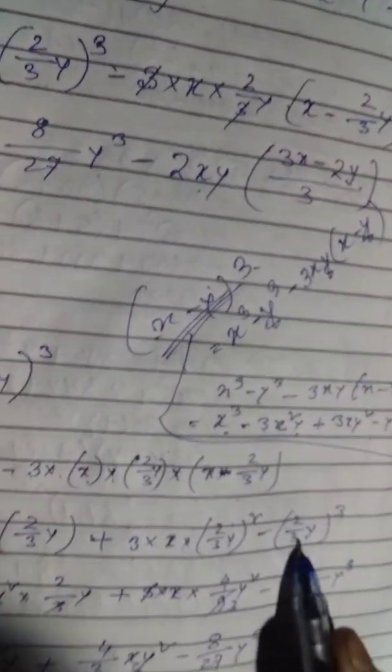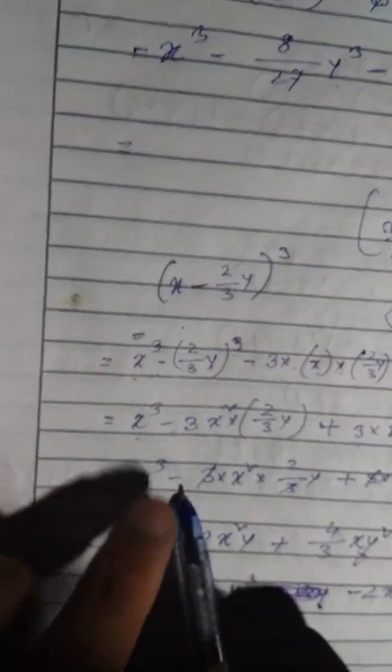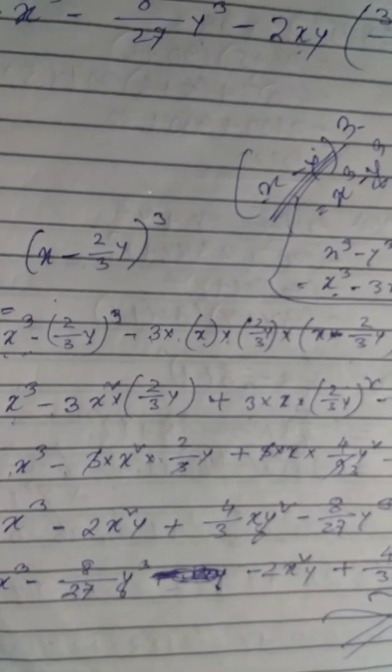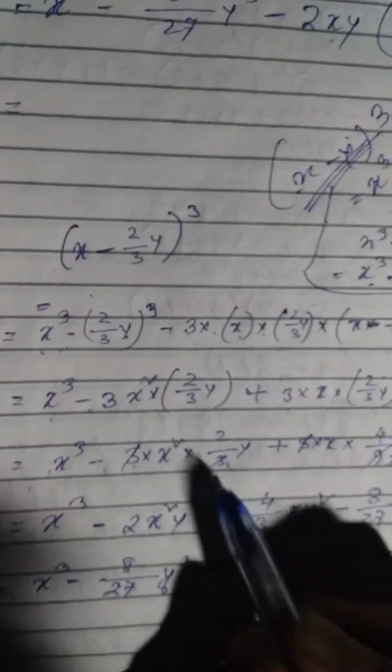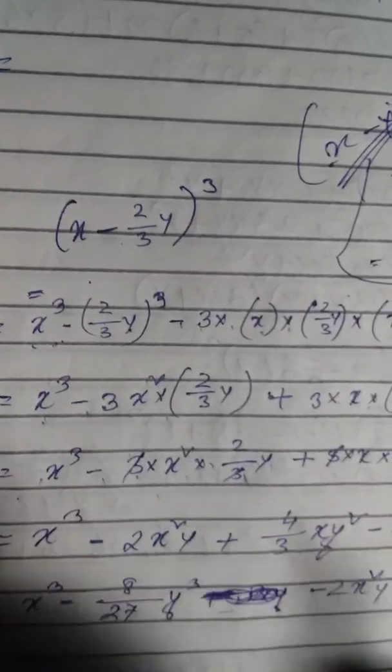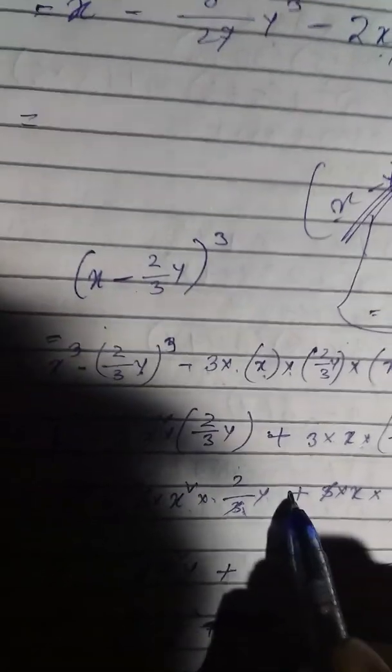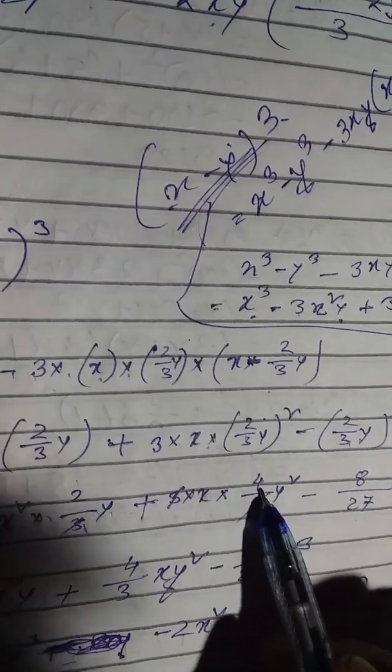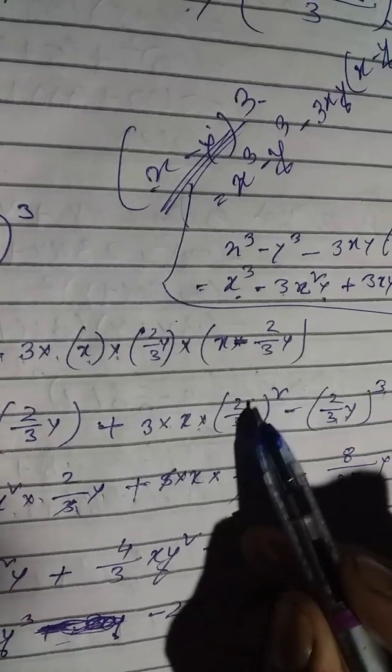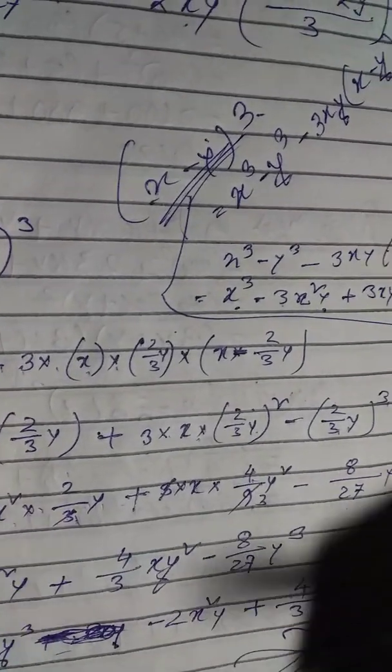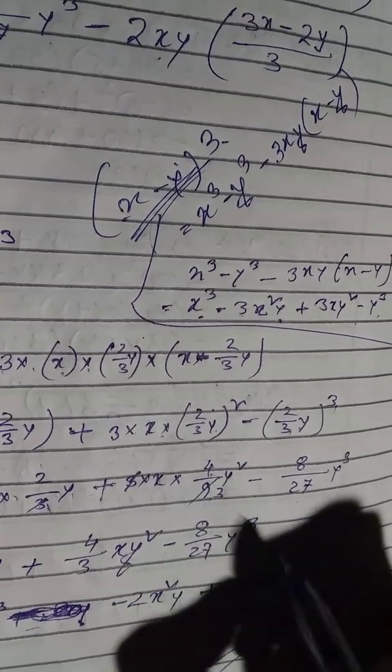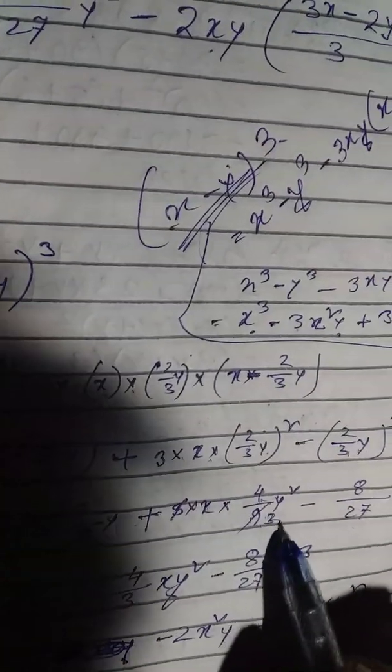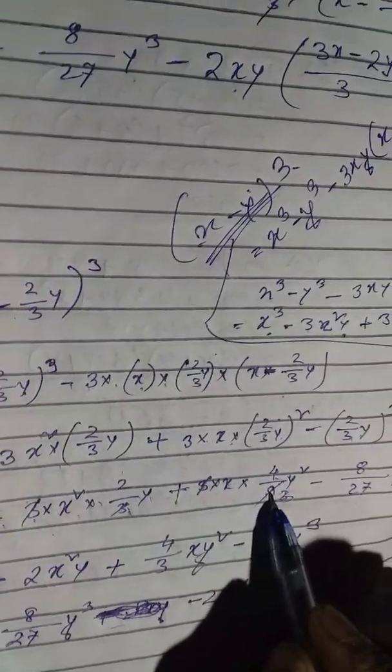Y cube. Okay, now next step. X cube minus 3 into X square into 2 by 3 into Y. X cube minus, I get it, 1 and 2. Plus 3 into X into 2 by 3 Y whole square. 2 by 3 Y whole square, this is the square. 2 by 3 Y whole square is 3 Y whole square, this is 9.